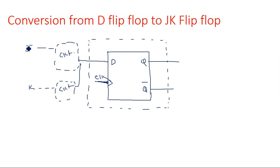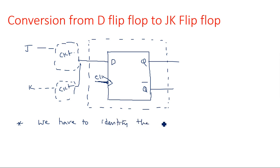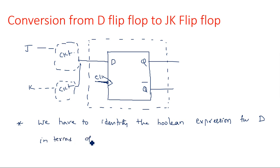We have external inputs J and K, and we need to derive the Boolean expression for D. From the above logic circuit, we have to identify the Boolean expression for D in terms of J, K, and Qn, where J and K are the external inputs and Qn is the present output.